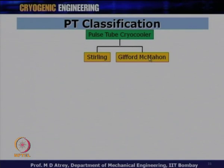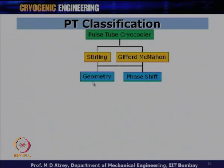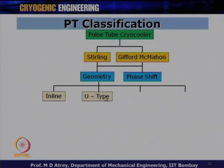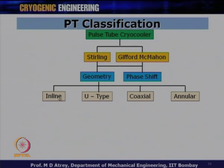Pulse tube cryocoolers can be classified based on whether they are Stirling type (no valve, high frequency) or Gifford-McMahon type (with valve, low frequency). Under both types, there are further classifications based on geometry and phase shift mechanism. Based on geometry: inline configuration, U-type configuration, coaxial configuration, and annular configuration. This refers to the relative position of the regenerator and the pulse tube. If they are inline, it is inline configuration; if parallel, U-type; if same axis, coaxial or annular.